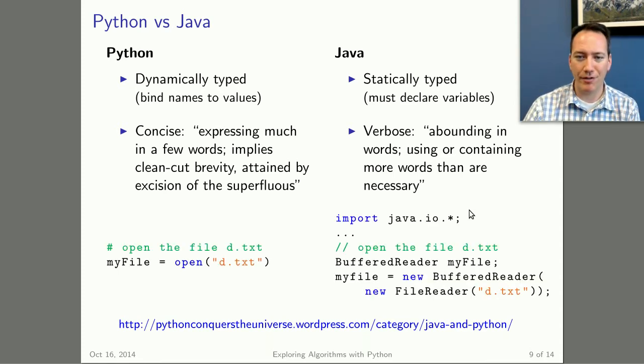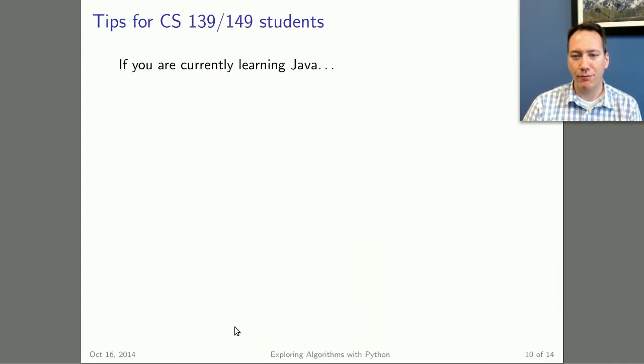The other main difference between Python and Java is that Python is very concise, so it takes very few words to express an idea. And by the way, these definitions are just from a dictionary, WordNet, whereas Java is verbose. It's abounding in extra stuff you always have to type, which is kind of annoying. So here's one of my favorite examples. In Python, if I just want to open a file, I say my file equals open and then the file name. Of course, this green line right here is a comment. In Java, if you want to open a file, first you have to import the IO library. Then you have to create a buffered reader. Well, first you have to declare the variable. Then you have to create a file reader object and wrap that in a buffer reader object. You can just see on the right how much more code you have to type to do something simple like open a text file. So anyway, there's this nice blog, Python Conquers the Universe, and they have a whole series of posts there about the differences between the two languages.